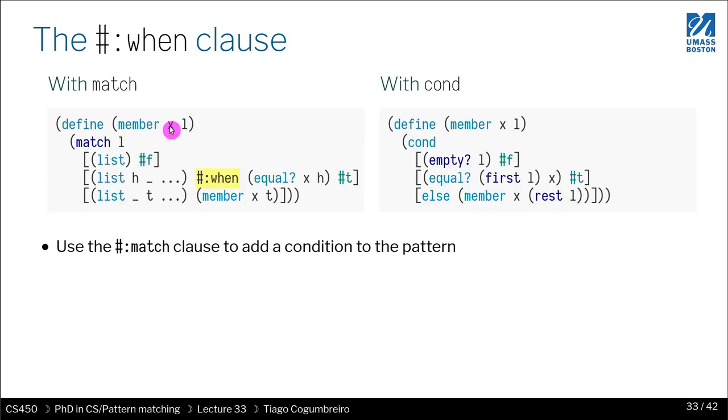Another thing you can do is you can use the pound colon when clause. And this is actually quite useful, as you will see in the following slides. So what the hash colon when allows you to do is add a condition, so call some code additionally to what we have. So let's see what we can do.